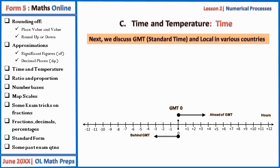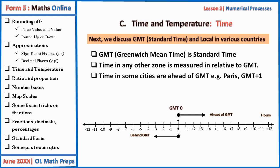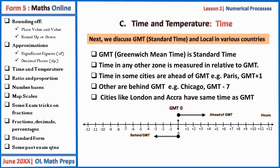Now let's look at GMT and local time, which you mostly see in paper one. GMT — Greenwich Mean Time — is standard time, and the time in any other zone is measured relative to GMT. Some cities are ahead of GMT; for example Paris is one hour ahead, so it is at GMT+1. Chicago is seven hours behind GMT, so it is at GMT−7. London and Accra have the same time as GMT, so they are at GMT+0.